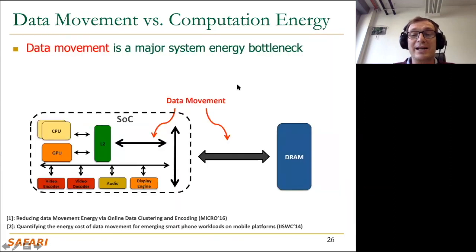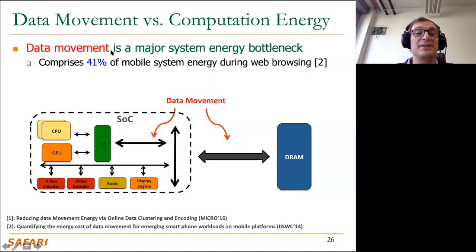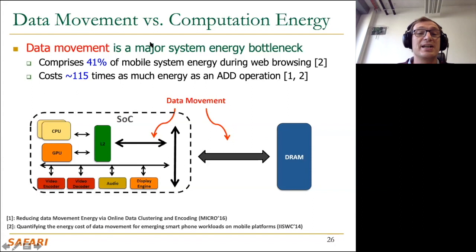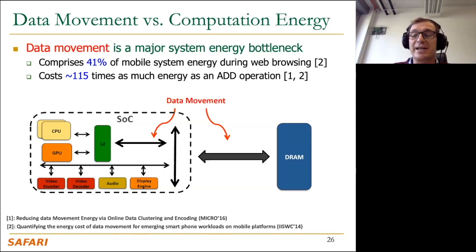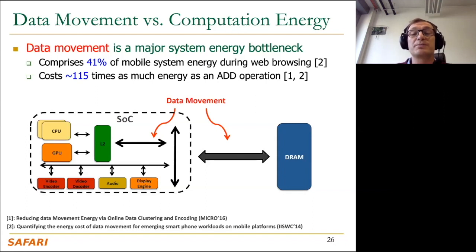A significant amount of energy is spent on data movement. A memory access consumes more than two orders of magnitude — as much as three orders of magnitude — more energy than an add operation. Some folks designing AI accelerators at the Design Automation Conference in 2019 said that in their system, a memory access costs 160 times the energy of a floating-point multiply-and-accumulate operation — a sophisticated operation used heavily for convolutions and matrix multiplication in machine learning.